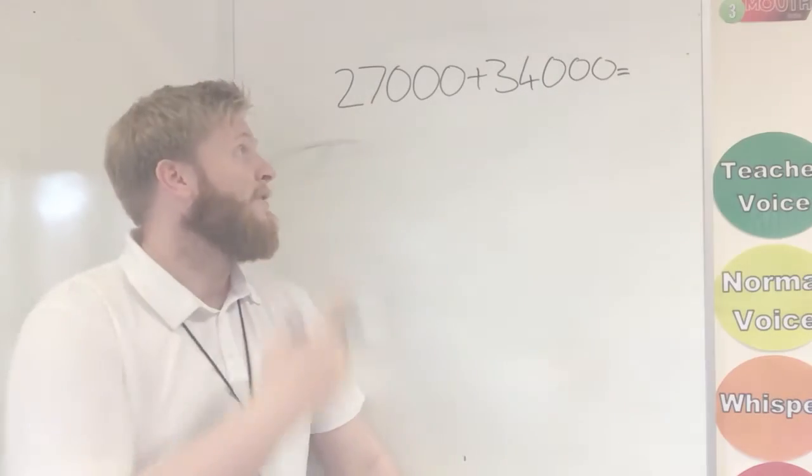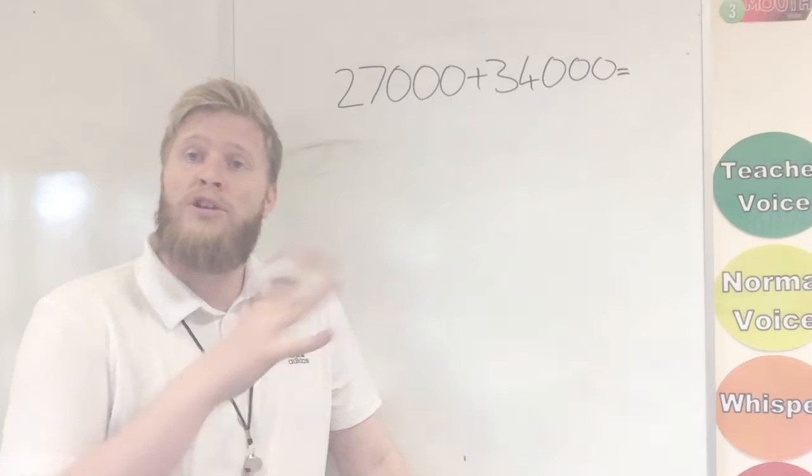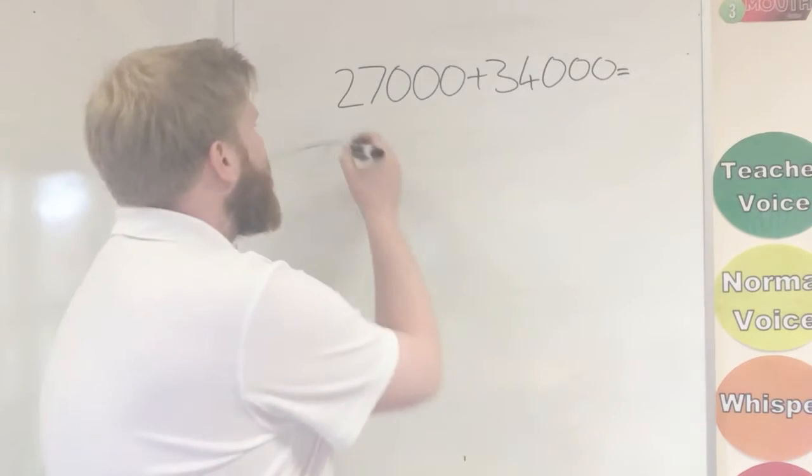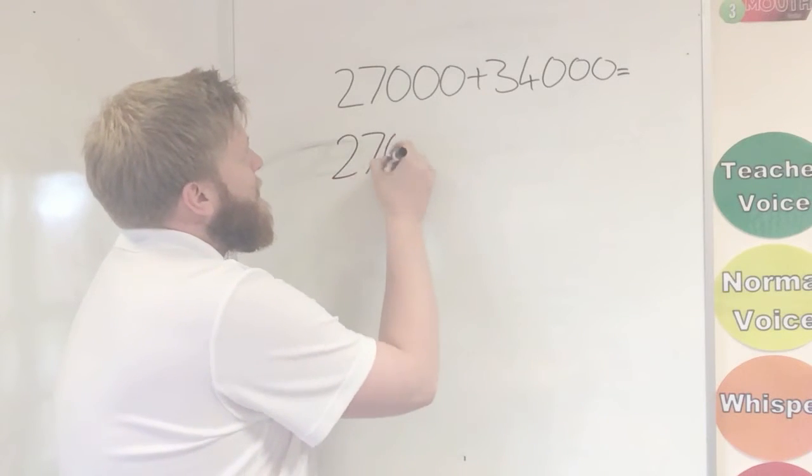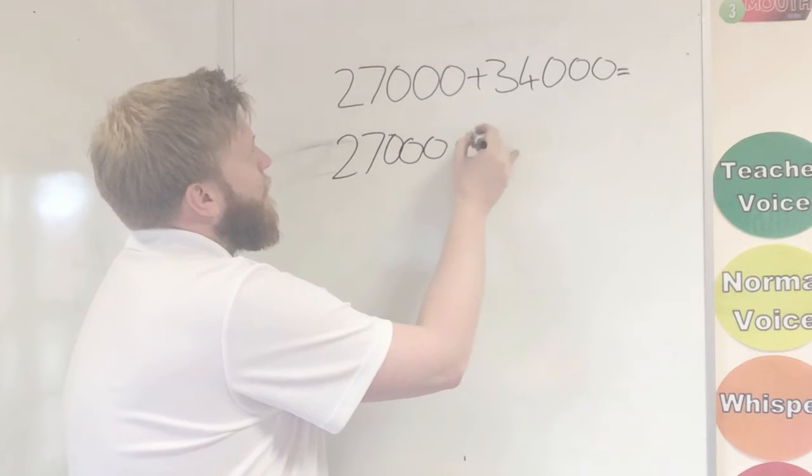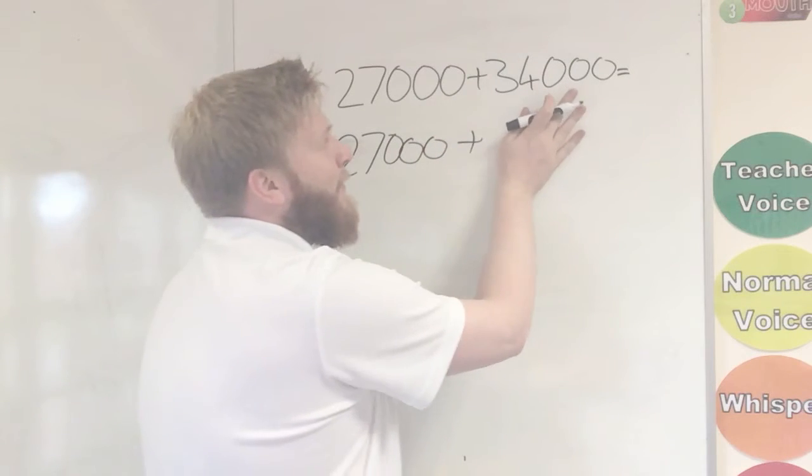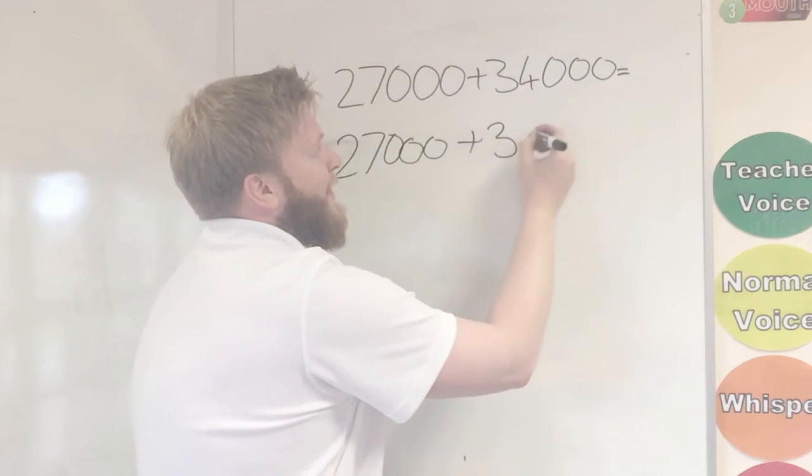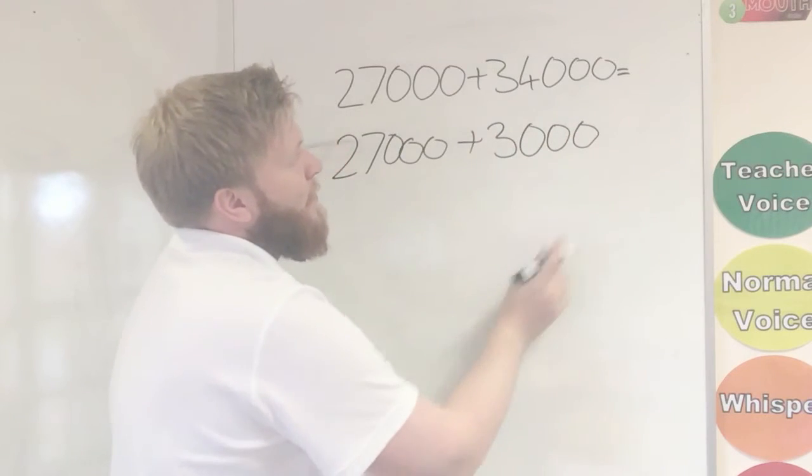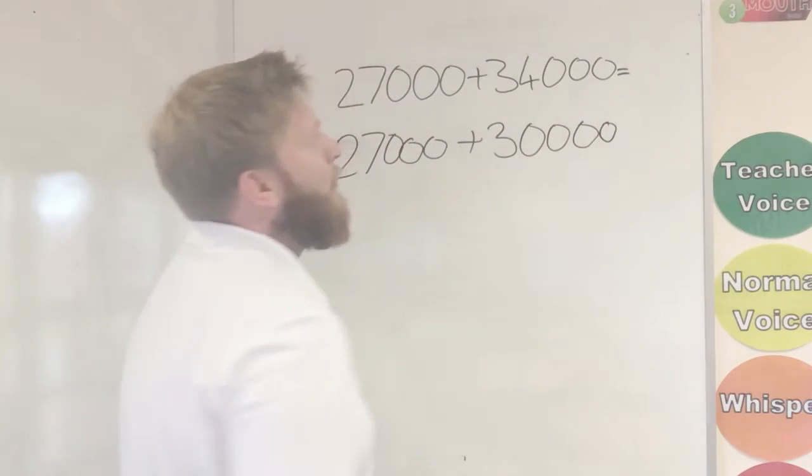Now the last way that we're going to look at how to do this sum is basically the same way, but we're going to change the other number. So I'm going to keep the 27,000 the same. And this time I'm going to have taken some numbers off, because that's still nearer 30,000, the same as our other number was.